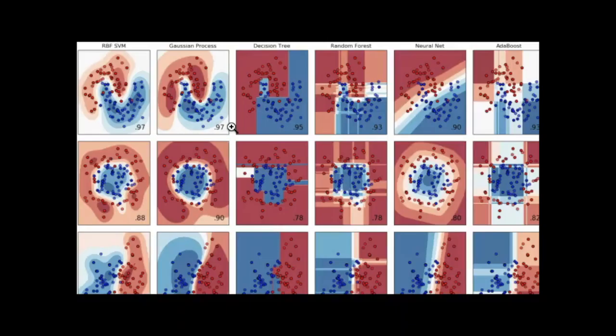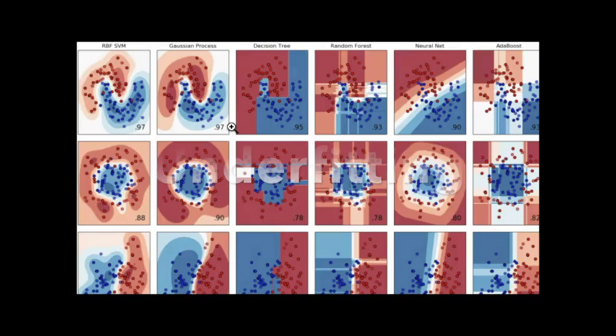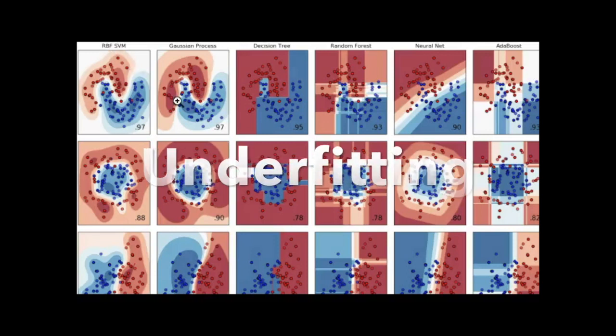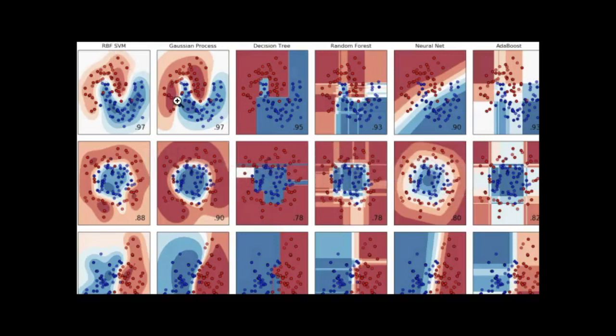There's underfitting too. Underfitting occurs when the model type that you've chosen — such as an RBF, a Gaussian process, decision tree, or random forest — all the ones you see across the very top of your screen, where the columns are model types.